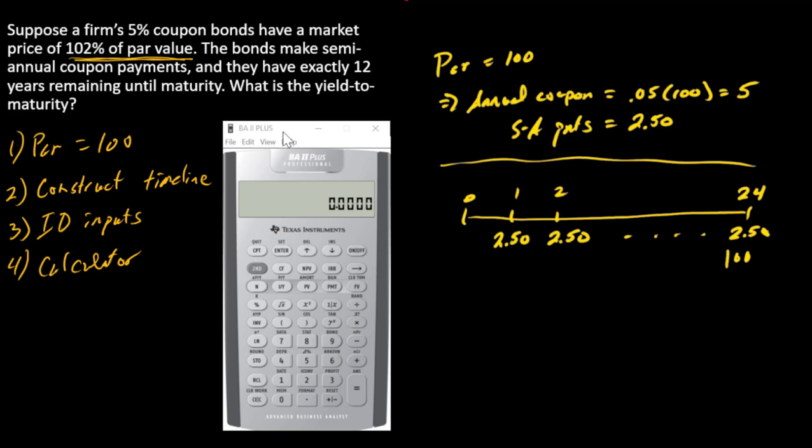So there's our par value repayment, and so the price of the bond is just the present value of all of this. So here are the cash flows, and so the PV of that is equal to the price, and we're told that the price is 102 percent of par value, or here that would be 102.